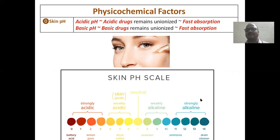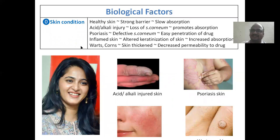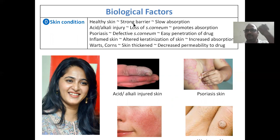Skin pH: Skin has a wide pH range. Acidic skin pH — acidic drugs remain unionized, so fast absorption occurs. Basic skin pH — basic drugs remain unionized, so fast absorption. Now biological factors: healthy skin has a strong barrier, so absorption is slow. Acid or alkali injury to the skin causes loss of the stratum corneum, promoting absorption. Psoriasis causes a defective stratum corneum, allowing easy drug penetration.